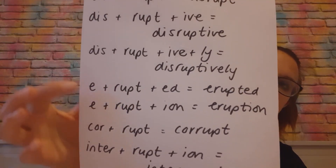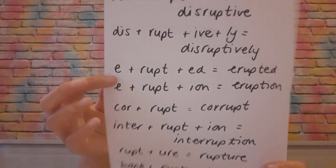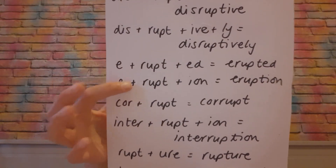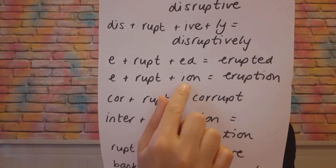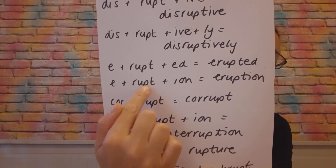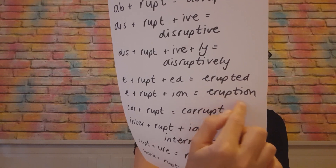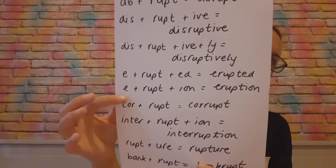Erupted and eruption. The 'e' is shortened from 'ex,' so if we know that 'ex' is a prefix meaning 'out,' we get 'break out.' For erupted and eruption, think about a volcano eruption — it's that lava breaking out from inside. And remember my favourite rule about the '-ion' ending: because the 't' is part of 'erupt,' we know that the 'shun' sound is spelled 't-i-o-n' when we put it together — not 's,' not 'c,' definitely not 'sh' — it is 'eruption.'